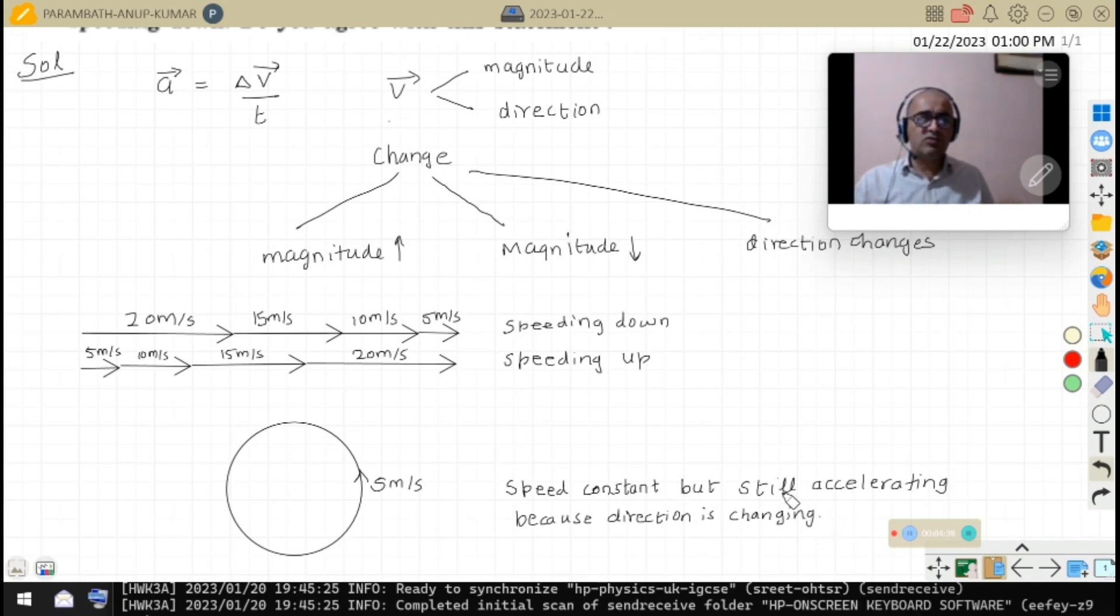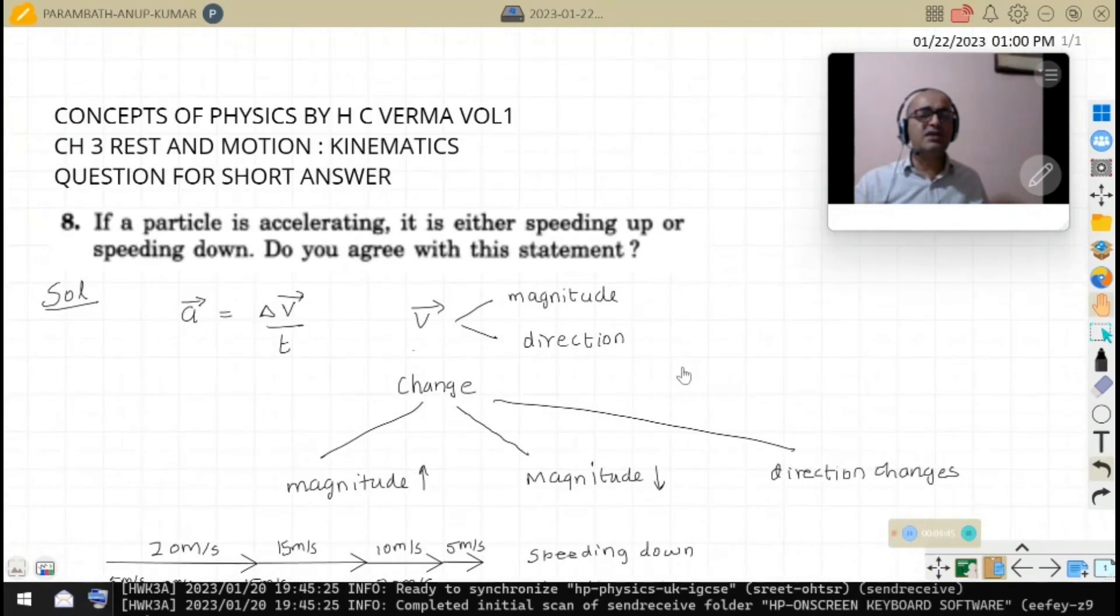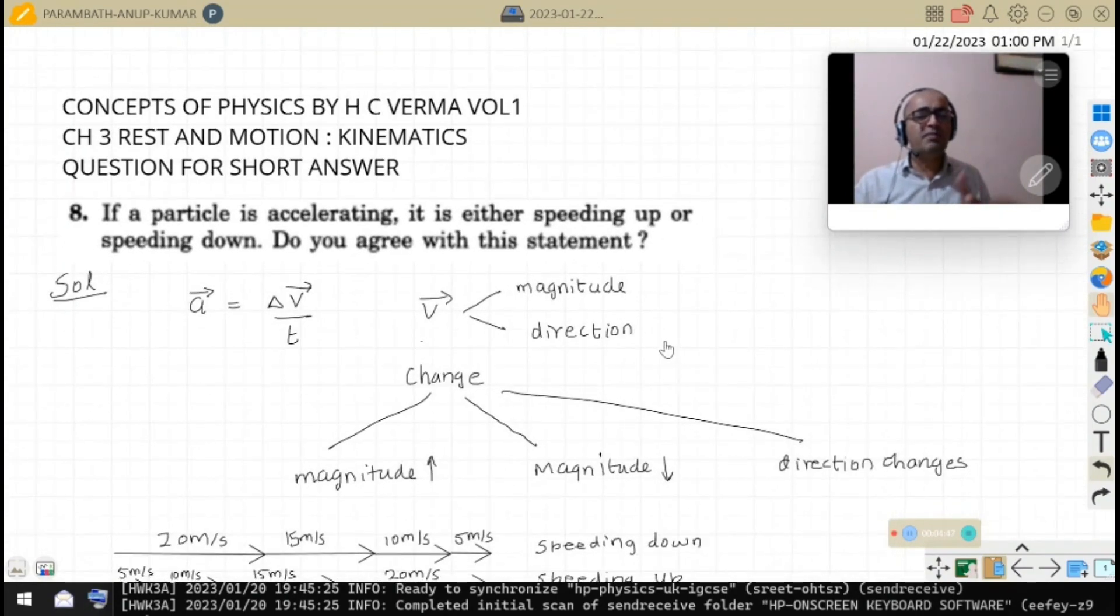I hope you are clear about this. So the statement, what is the problem with the statement given? The statement is allowing only two things: if a particle is accelerating, it is either speeding up or speeding down. That is not correct. It can be neither speeding up nor speeding down, but moving in a circular motion or in a curved path such that its direction is changed. Thank you.